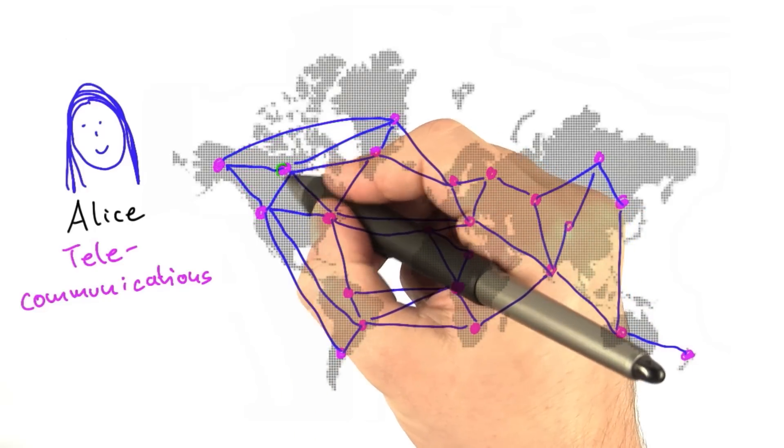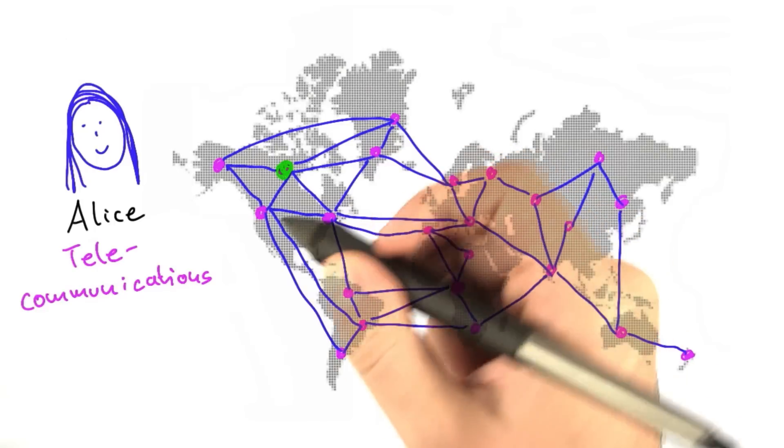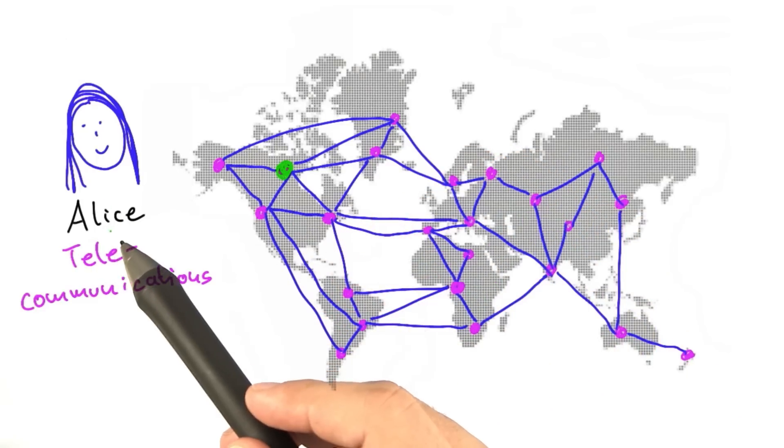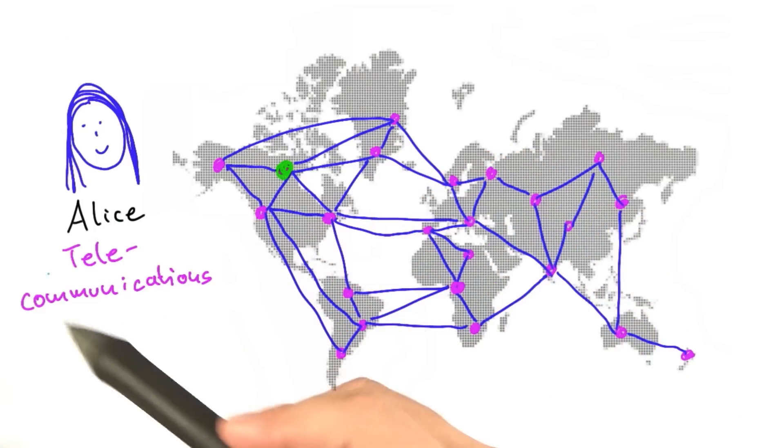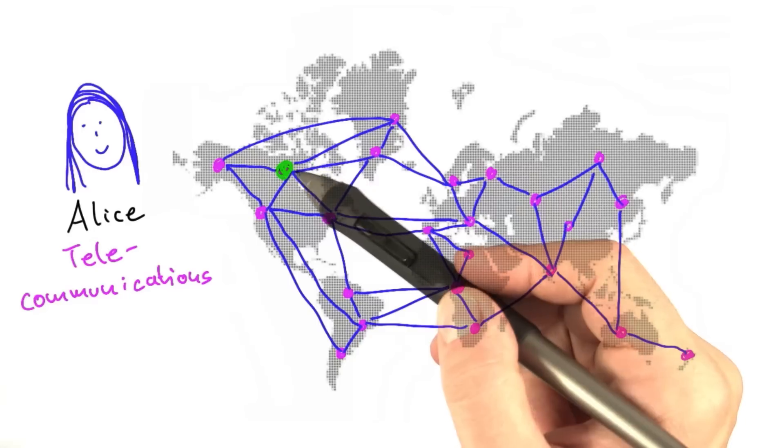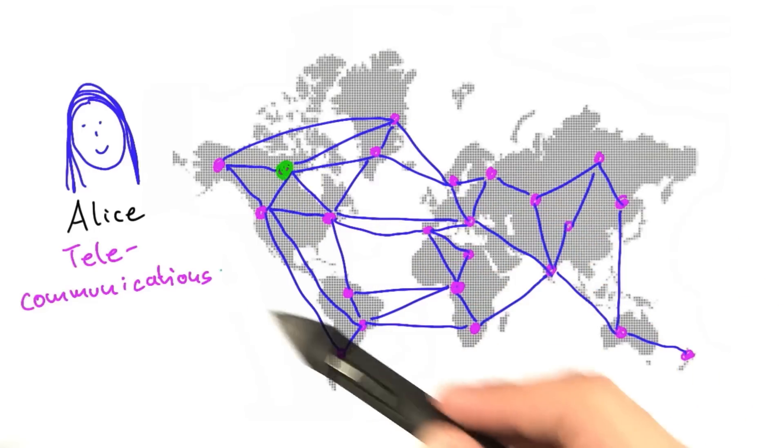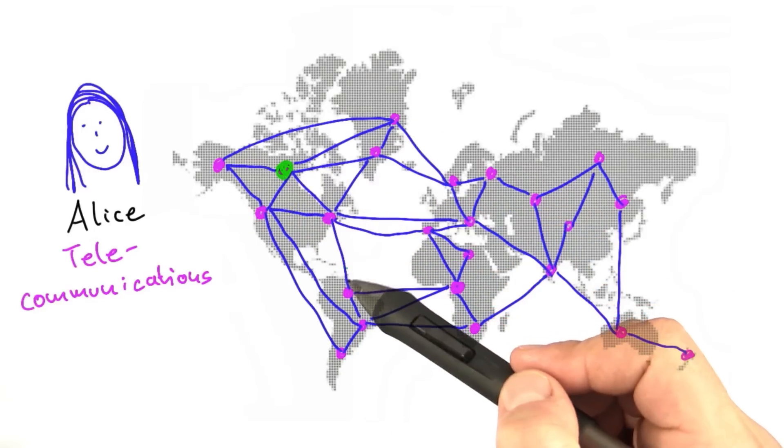Installing one of these devices is quite expensive. That is why Alice has been asked by her employer, the telecommunications company, to figure out a way to monitor the whole network by installing as few devices as possible.